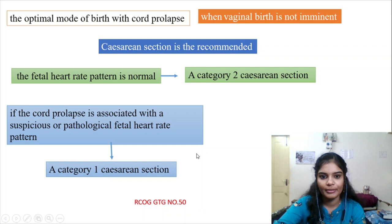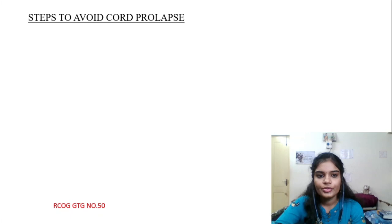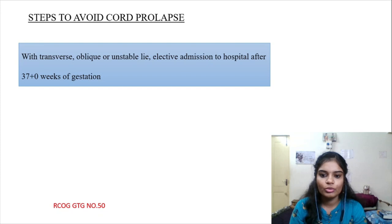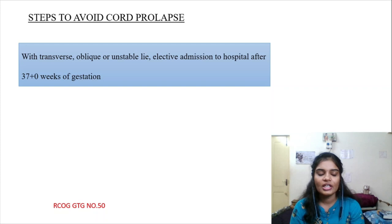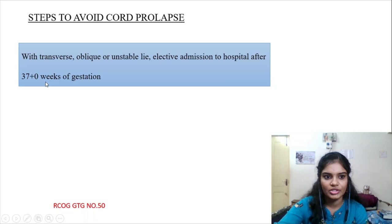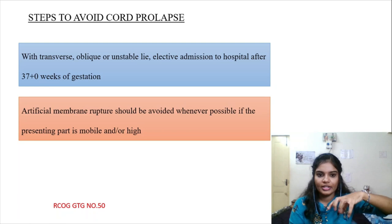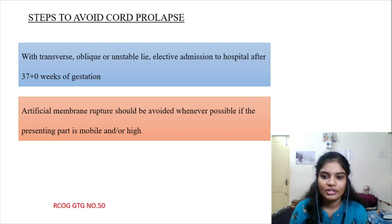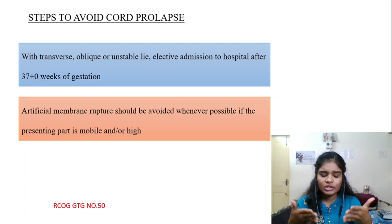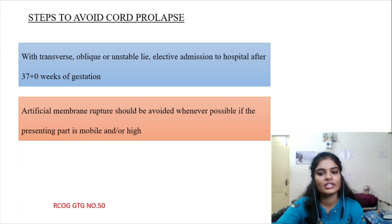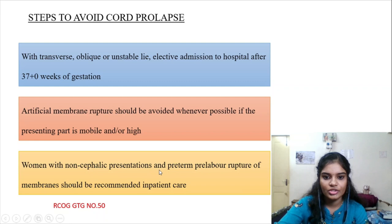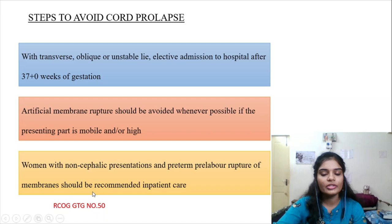To avoid cord prolapse: if it is a transverse, oblique, or unstable lie, the cord can prolapse any time if membranes rupture, so admit these patients at 37 weeks. When the presenting part — whether cephalic or breech — is very high or mobile, do not perform artificial rupture of membranes, as the cord can come out before the head fixes in the pelvis. Third, when a woman with a non-cephalic presentation presents with preterm premature rupture of membranes, recommend inpatient care, as cord prolapse can happen at any time.